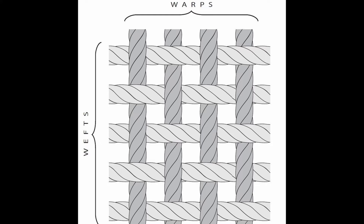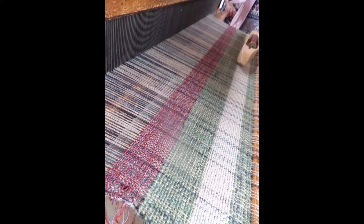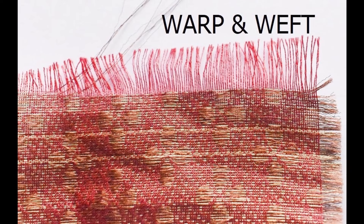Hello everybody and welcome back to this new episode of Textile with Alberto. Perhaps you have already heard about warp and weft in textiles. Warp and weft are those things that interlace themselves in order to have a fabric. One yarn goes up and down, the other goes right and left, and you create the woven fabric.